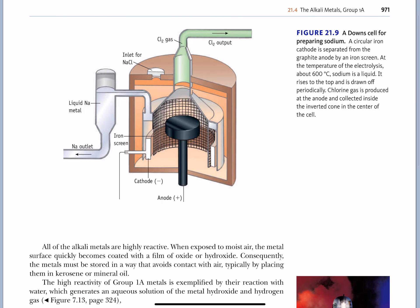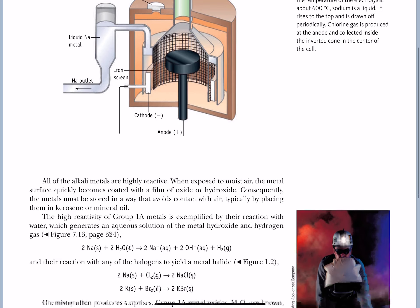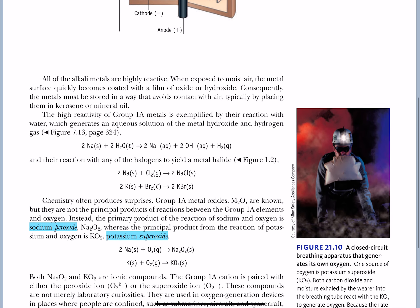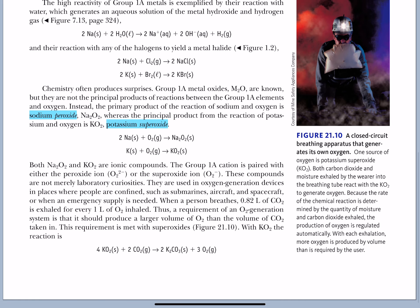Fortunately, on the AP test, you won't have to know too much about some of these industrial processes like the Downs cell for preparing sodium. But if you're going to be separating sodium from chlorine in sodium chloride table salt, you better have a safe way to store that sodium and a safe way to store that chlorine. They're valuable elements, but they're very, very dangerous.